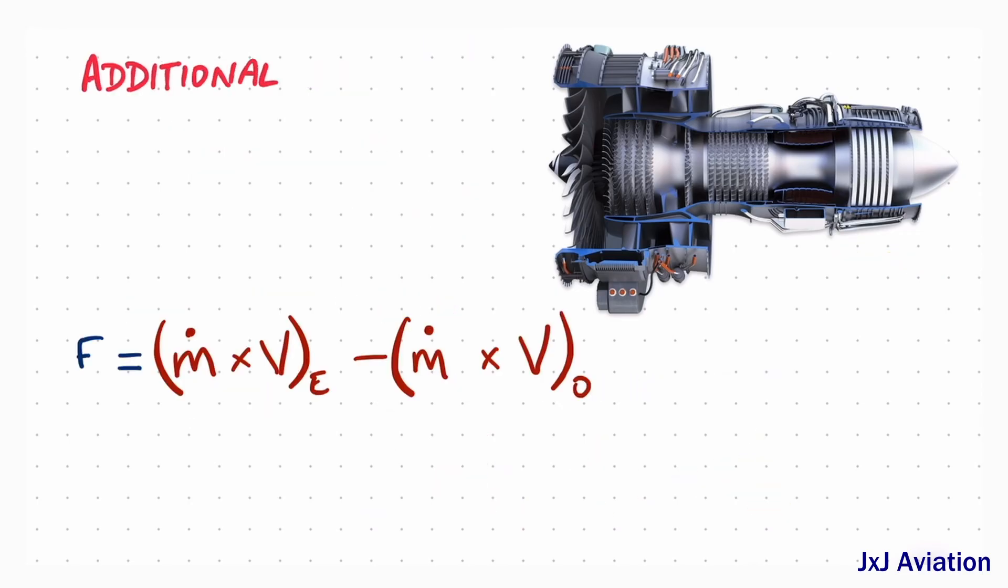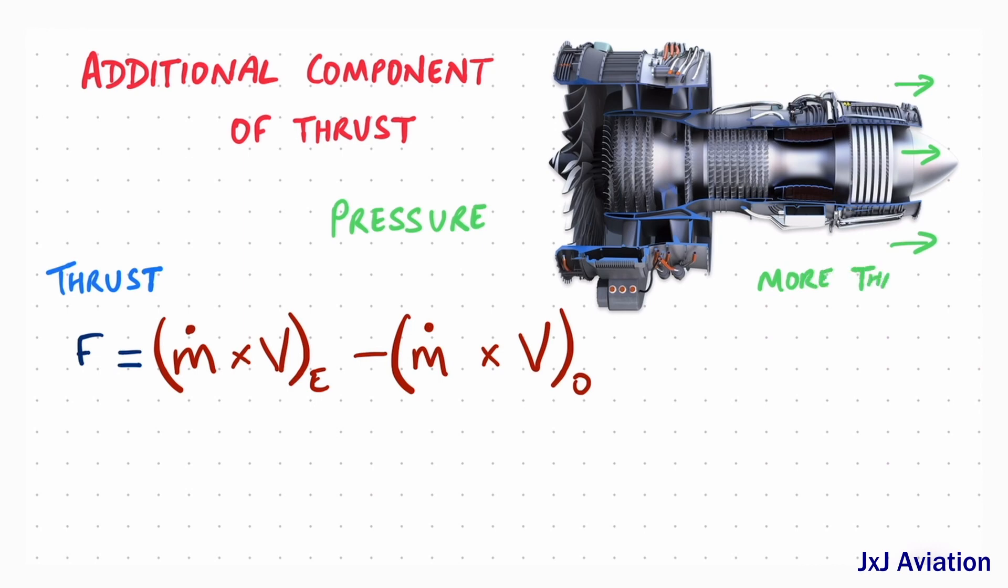Additional component of thrust. In the thrust equation, we can include an additional component, which is the pressure. If the exit pressure is more than the free stream pressure, it creates an additional forward force which must be included in the thrust equation. This component is written as the product of difference in the pressure and the exit area.